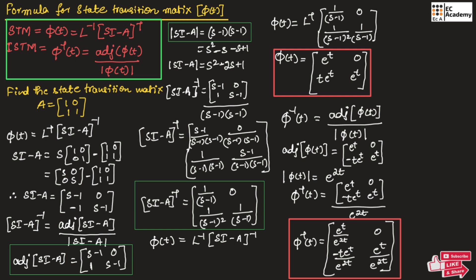Now we need to take the inverse of (SI - A). To find the inverse, we need the adjoint of (SI - A) divided by the determinant of (SI - A). The adjoint of (SI - A) is found by interchanging the diagonal elements and multiplying the off-diagonal elements by minus 1. Interchanging (S-1) and (S-1) leaves the values the same, and multiplying the off-diagonal elements by minus 1 gives us 0 and 1. So this is the adjoint of (SI - A).